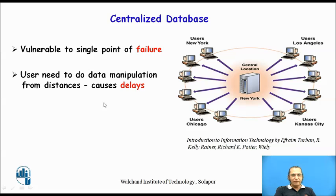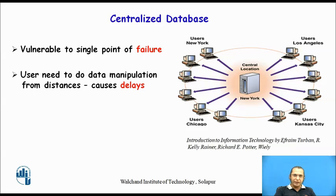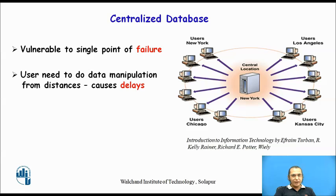The second problem with centralized database is that users located far away from the centralized database, whenever they want to access it — whether an action query or a select query — if the user is geographically located away from the centralized database, every transaction has to travel to the centralized location, causing delays. So the two problems are: first, if the single point fails it has a catastrophic effect; and second, as users go farther from the centralized database, the delay for transactions increases.